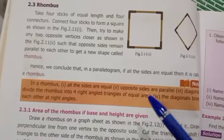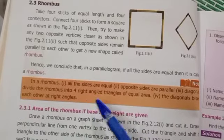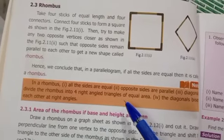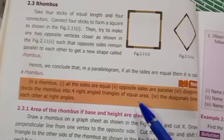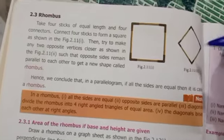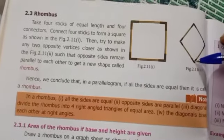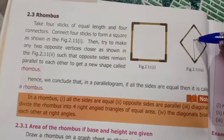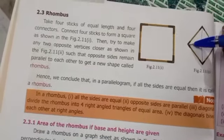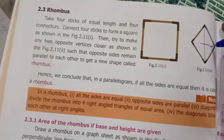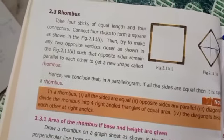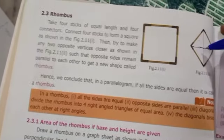Diagonals divide the rhombus into four right-angled triangles of equal area. Diagonals means we join the opposite vertices. We get four right-angled triangles.